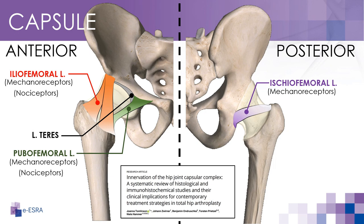The hip joint capsule has the most nociceptive, pain-sensitive fibers in its anterior and inferior regions, because these regions are under the greatest amount of tension during movements that involve hip flexion and adduction. In contrast, the posterior region has fewer nociceptive fibers as it is subjected to less tension during hip movements. However, the distribution of nociceptive fibers can vary between individuals and can change depending on the presence of pathology or injury.